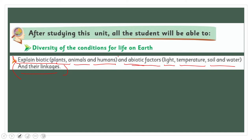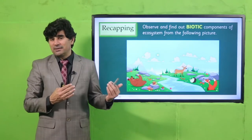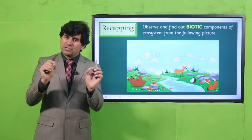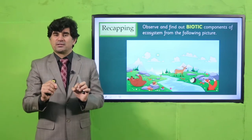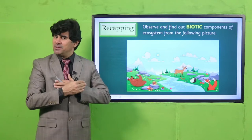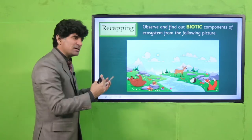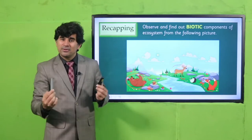My dear students, let's have a recap. I'm going to show you a picture — a scenery — and you have to find out all the biotic factors, the biotic components: plants, animals, and human beings. See this picture. You see here one animal, another animal, and another animal, and these are the plants. Plants and animals constitute biotic factors; these are called biotic.